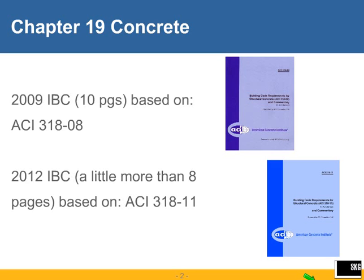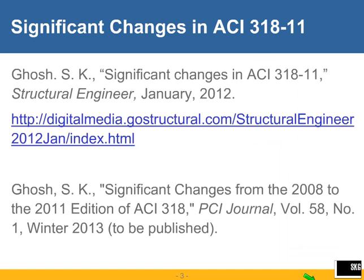The first slide tells you — this is something you probably have found out — that the reference standard in the IBC, which used to be 318.08 in the 2009 IBC, has changed to 318.11 in the 2012 IBC. This means whenever the 2012 IBC is adopted by your local jurisdiction as the basis of the legal code, you will be required to do your concrete design by ACI 318.11 rather than 318.08.